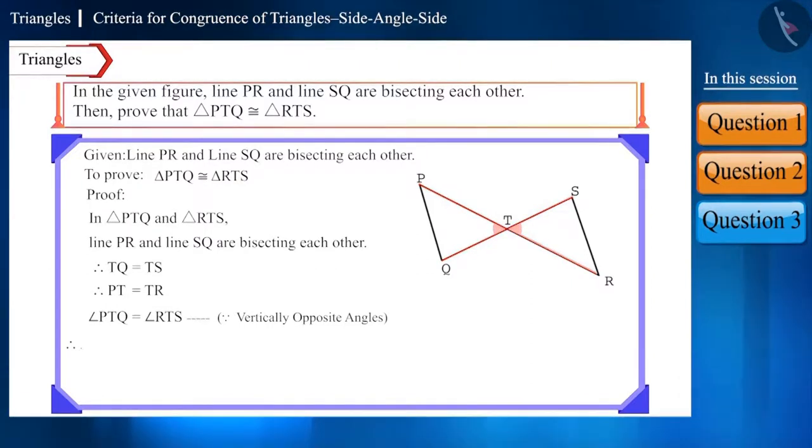Therefore, according to the SAS criterion, triangle PTQ is congruent to triangle RTS. Friends, you can see here that the names of the two triangles are in the same order as the congruence of their sides and angles.